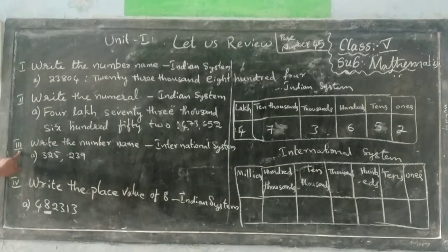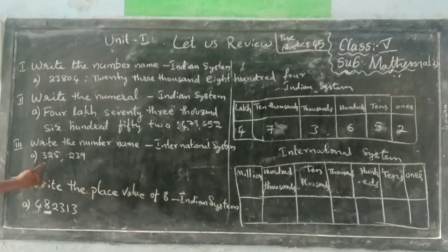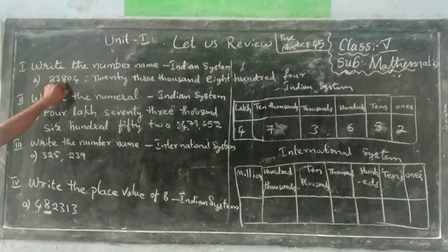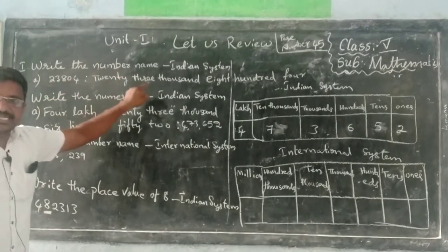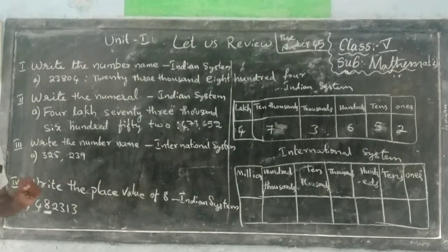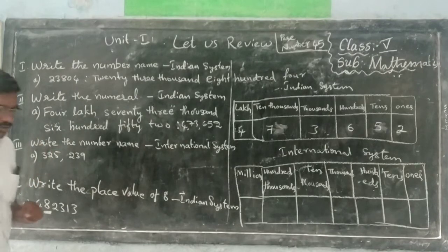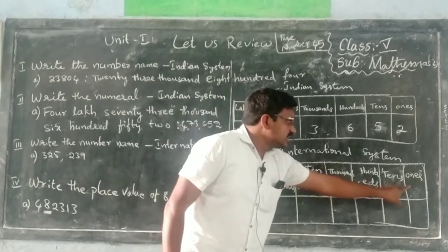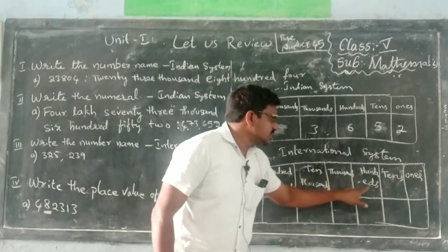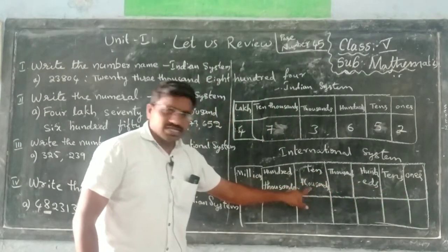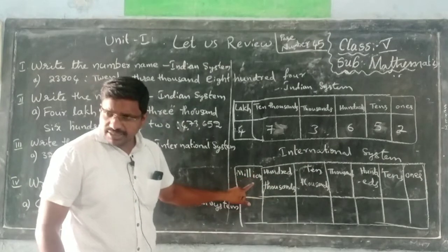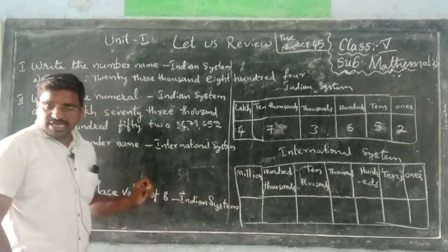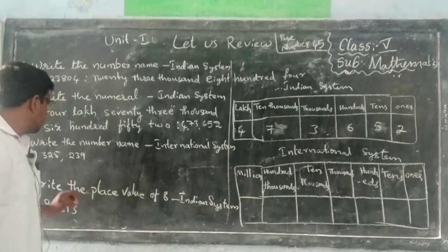Now come to the third question: write the number name in the International system. We already did 23,804 in the Indian system; now we are going to do the International system. In the International system, the place values are: 1, 10, 100, 1000, 10,000, 100,000, and millions. Last year we studied up to millions.